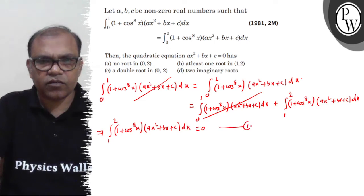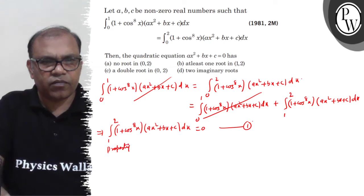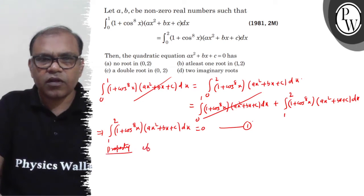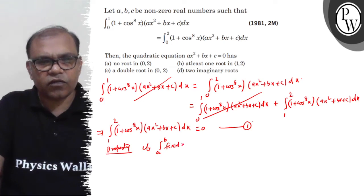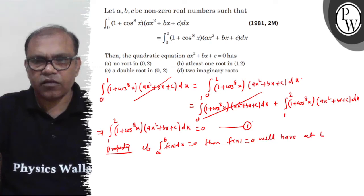Now look, here, if integral from a to b of f(x)dx = 0, then f(x) = 0 will have at least one root in (a, b).